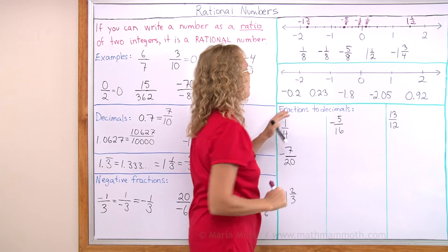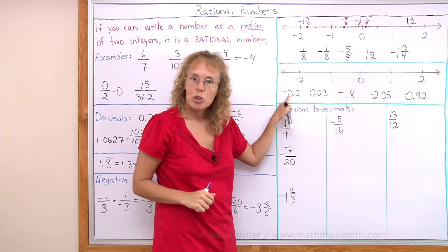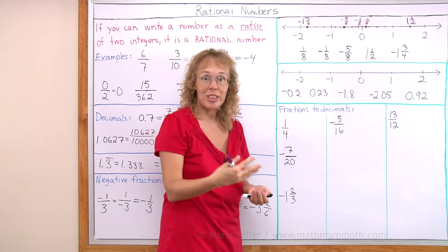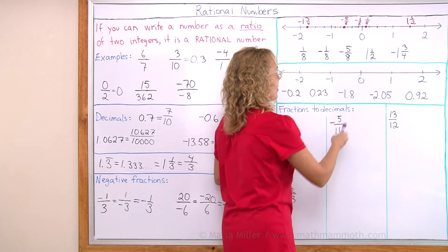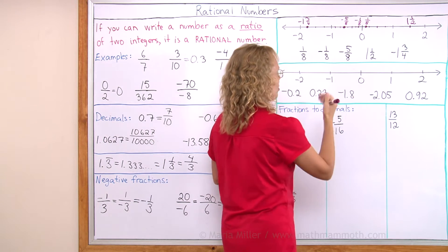And let's do the same with these decimal numbers. Again, I have the same kind of number line. This one here is negative 2/10. Well, it's actually a fraction, 2/10. So this here needs to divide it into 10 parts.